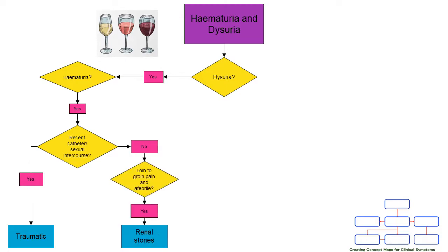We now look at a patient who has not had recent catheterisation or sexual intercourse. They have loin to groin pain, but they are afebrile. We can attribute this cause to renal stones.